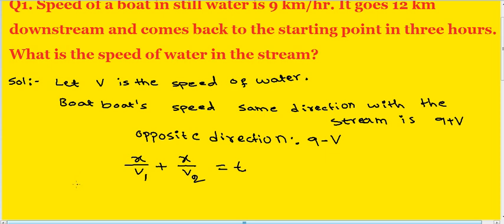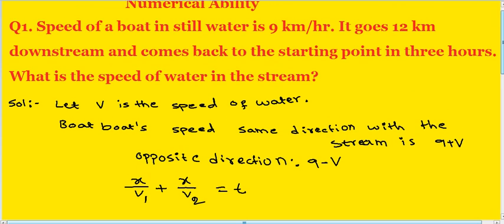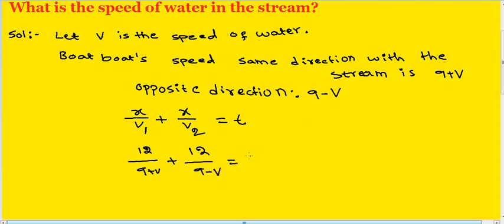Substituting the values: x is 12 kilometers. So, 12 divided by v1 (which is 9 plus v) plus 12 divided by v2 (which is 9 minus v) equals 3 hours.